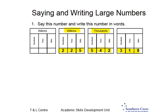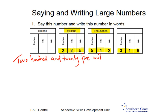Putting that into words, that means we're going to have two hundred and twenty-five million, five hundred and forty-two thousand, three hundred and nineteen.